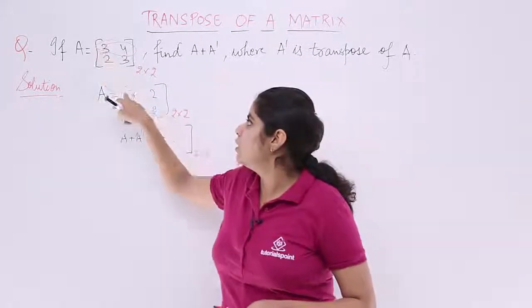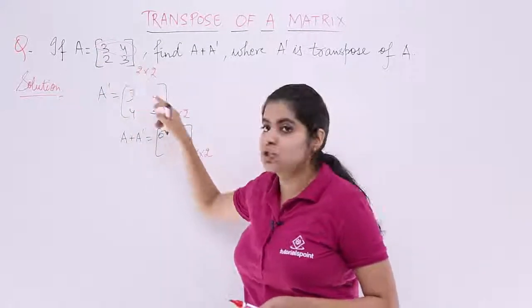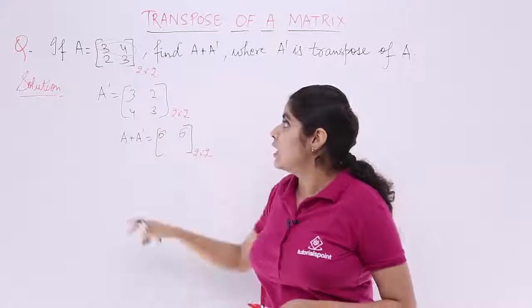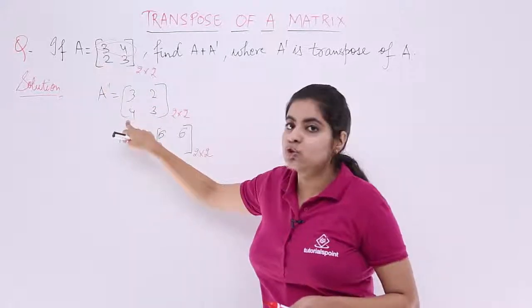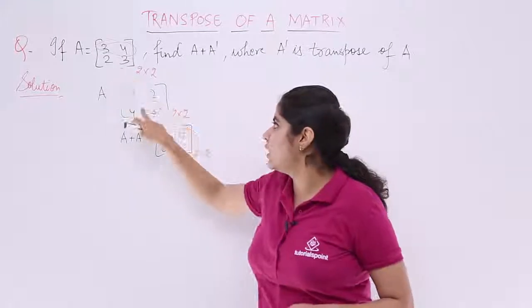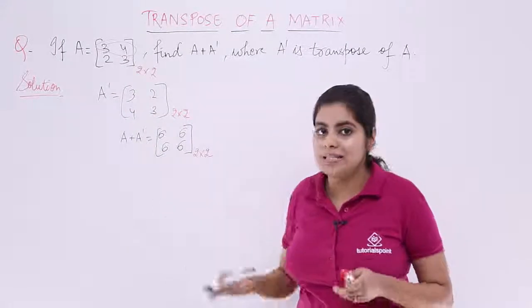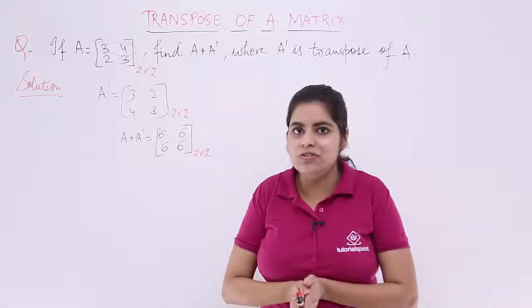So we are performing the addition and the result is also a 2 by 2 matrix. Now, let's add the values. 3 here, 3 here gives me 6. Similarly, 4 plus 2 gives me 6. Here, 4 plus 2 or 2 plus 4 is again 6. And last but not the least, 3 plus 3 is also 6. So basically, my answer is a matrix which has all the entries as 6.